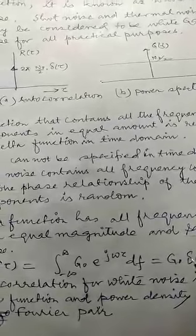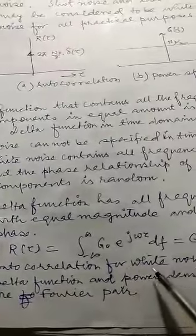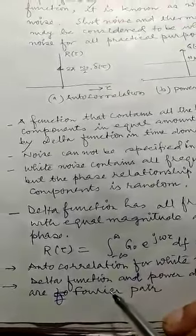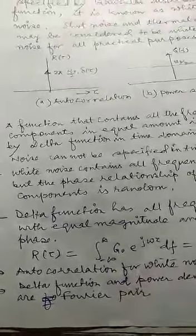...so here we are having the autocorrelation for white noise is an impulse function. And delta function and power spectral density both are the Fourier transform pairs. Thank you very much.